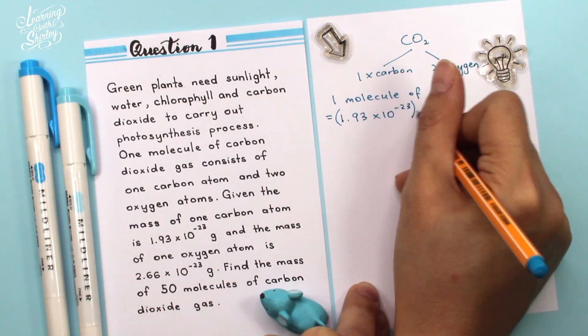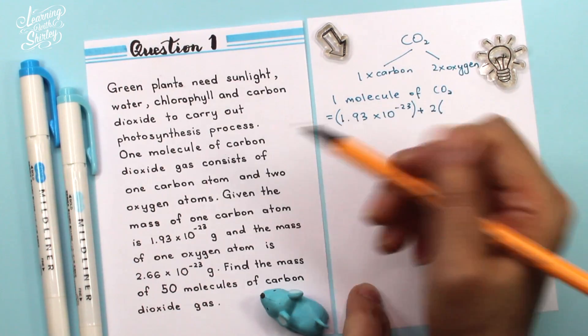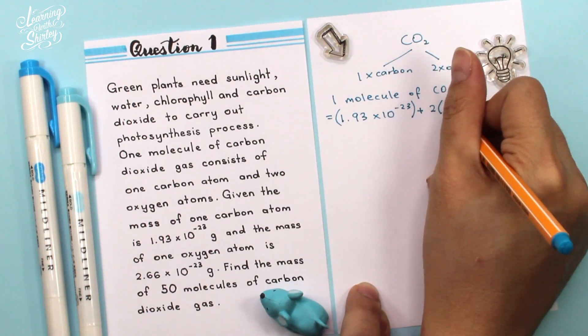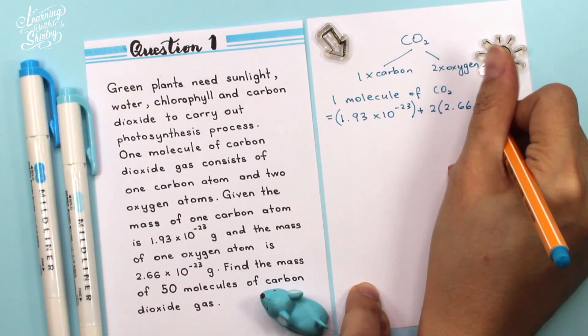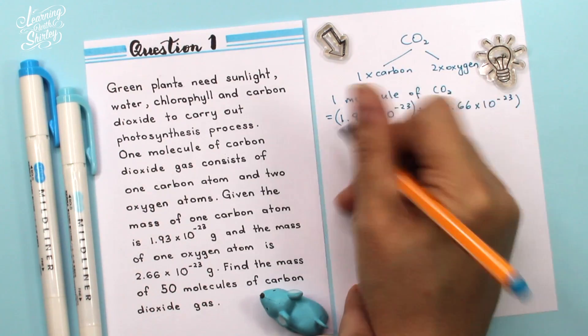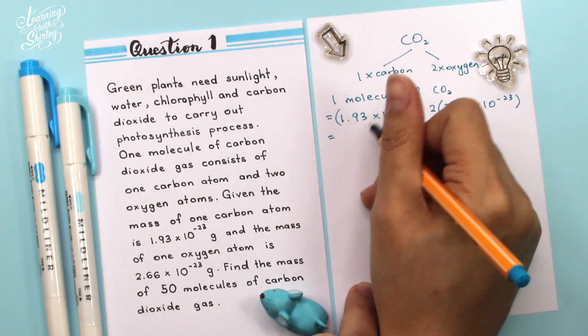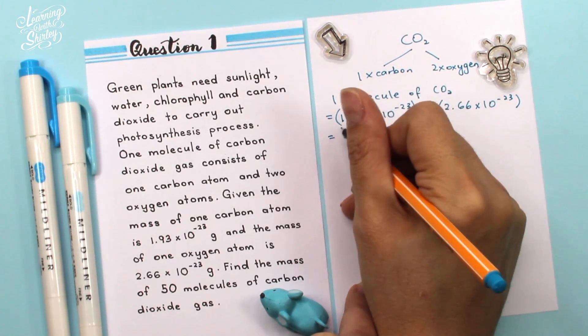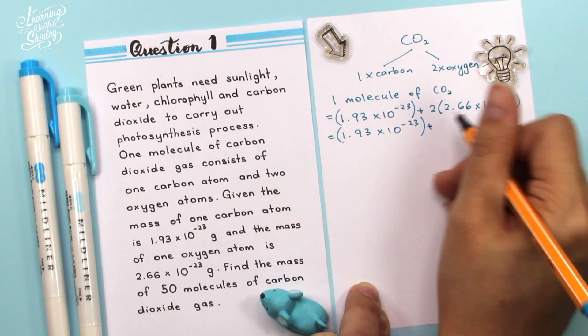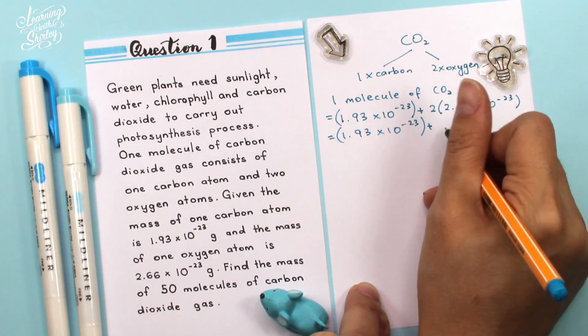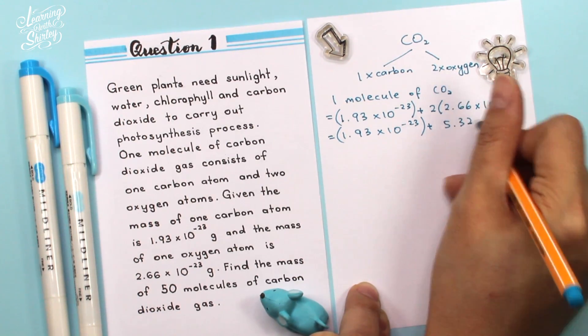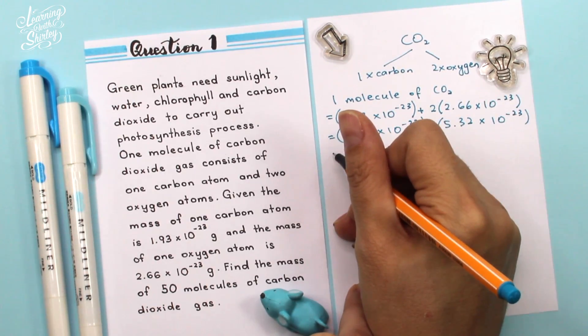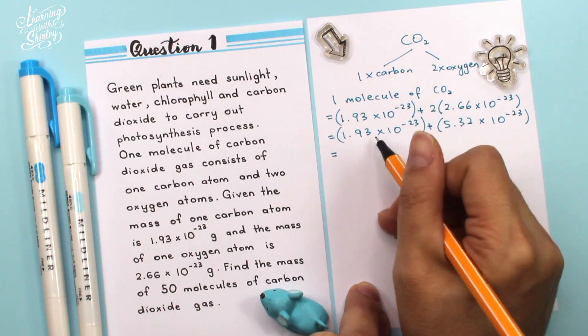So in bracket, plus 2 times of oxygen which is 2.66 times 10 to the power of negative 23. So this one, I bring it down. And then, here will be plus 2 times 2.66 which is 5.32 times 10 to the power of negative 23.